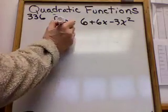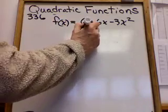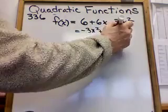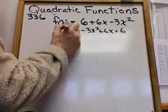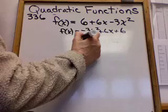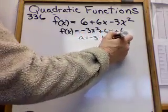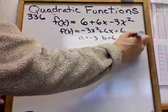As negative 3x squared plus 6x plus 6. It's easier to recognize my a's and b's. a is negative 3, b is 6, c is 6.